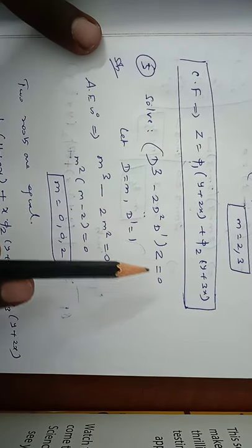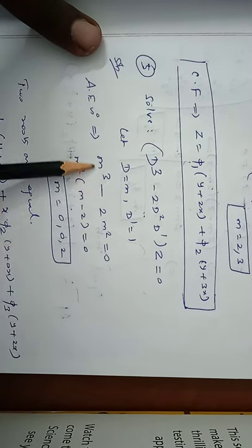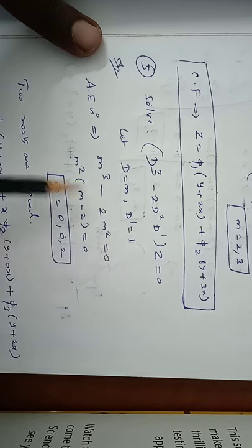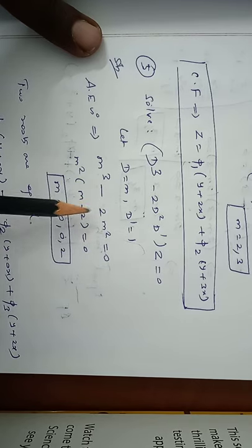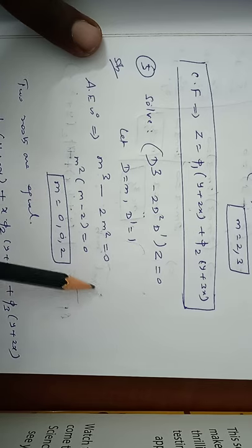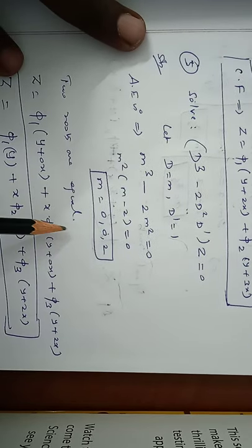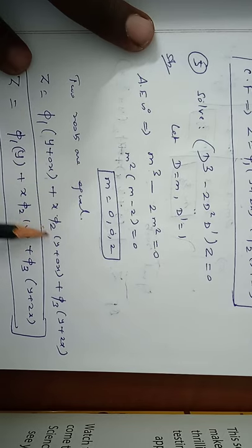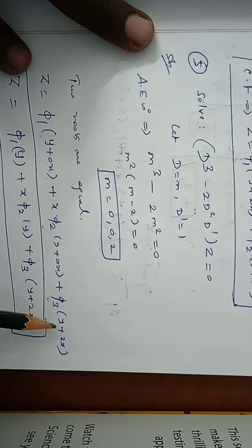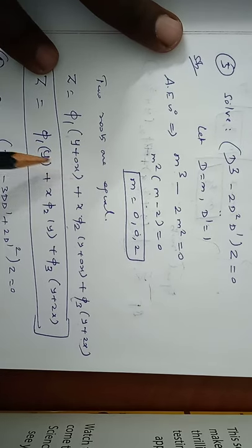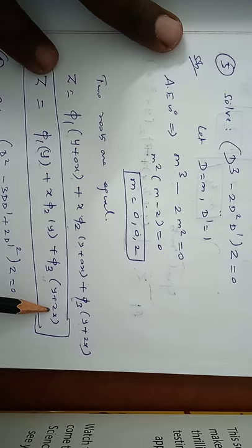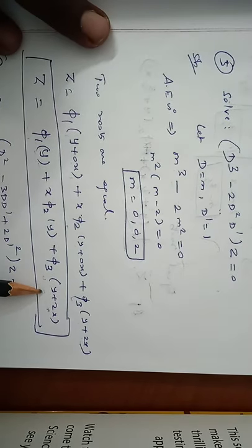Problem 5: solve (D³ - 2D²D')z = 0. Let D = m, D' = 1. The auxiliary equation is m³ - 2m² = 0. Taking m² as common: m²(m - 2) = 0, giving m = 0, 0 and m = 2. The root m = 0 is repeated twice. The complementary function is z = φ₁(y) + x·φ₂(y) + φ₃(y + 2x).